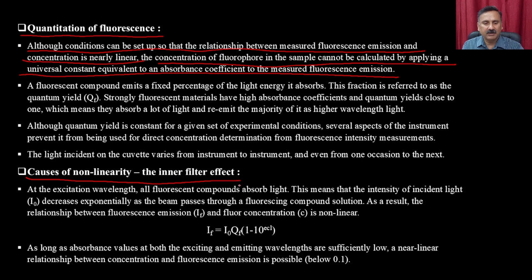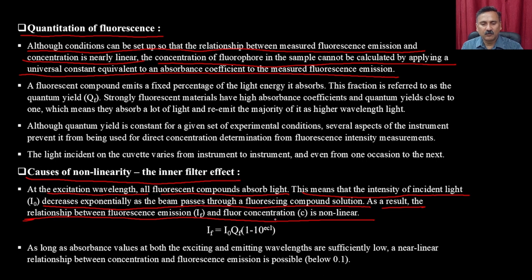The relationship between fluorescence emission and fluorophore concentration is non-linear: I = I₀ · QF · (1 − 10^(−εCl)). As long as absorbance values at both the exciting and emitting wavelengths are sufficiently low, a linear relationship between concentration and fluorescence emission is possible. This means if you want to use fluorescence to measure substrate or product, you must always use diluted samples.